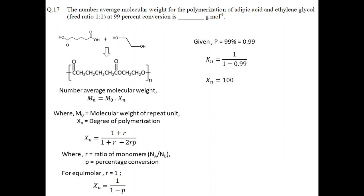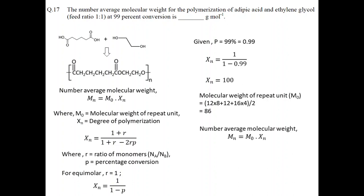To calculate the molecular weight of the repeat unit, we add the atomic weights of all atoms and divide by 2. The molecular weight of the repeat unit is 86. Knowing the degree of polymerization and the repeat unit molecular weight, we calculate the number average molecular weight by multiplying the two, giving an answer of 8600 g/mol.